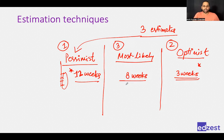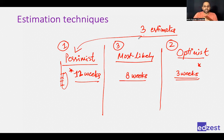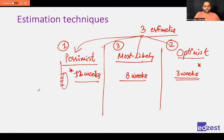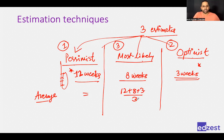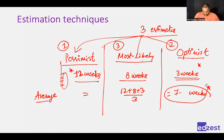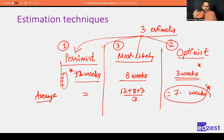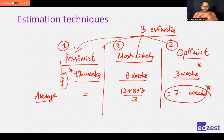So you have three estimates: pessimistic (12 weeks), most likely (8 weeks), and optimistic (3 weeks). You can take a simple average: 12 + 8 + 3 divided by 3, which is approximately 7.67 weeks. You didn't have historical information, but you have experienced people who thought about all scenarios — best case, worst case, and normal. This is a good estimate to have.